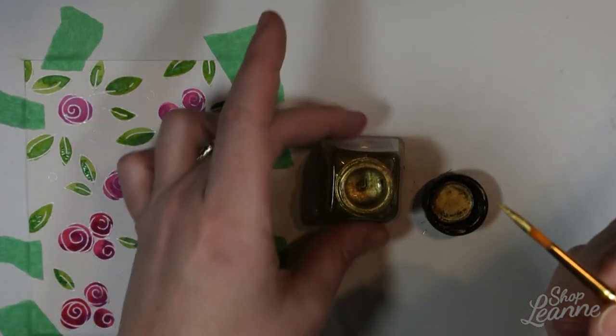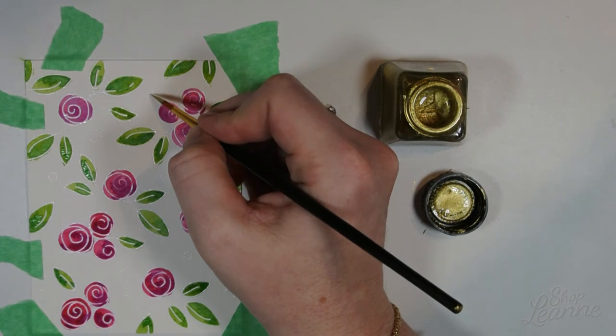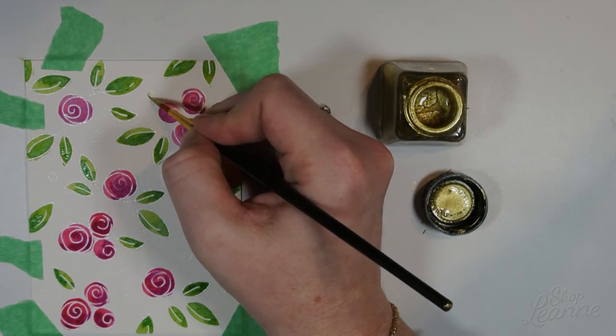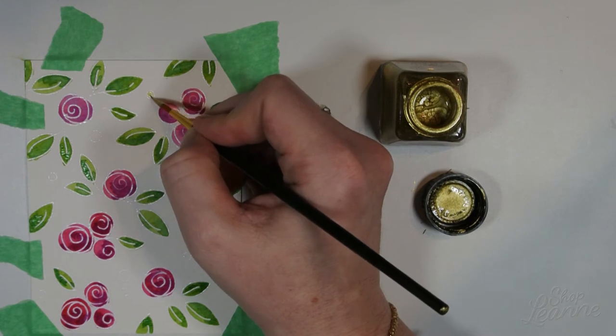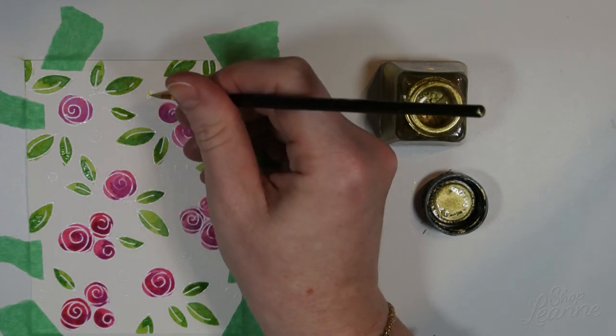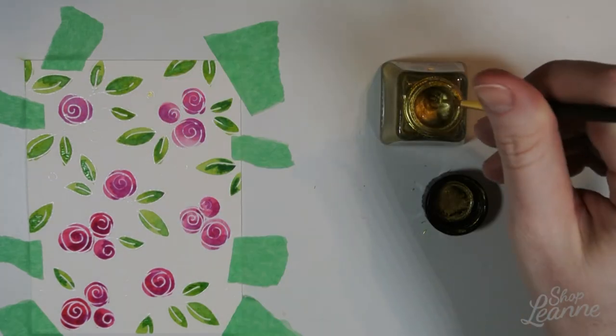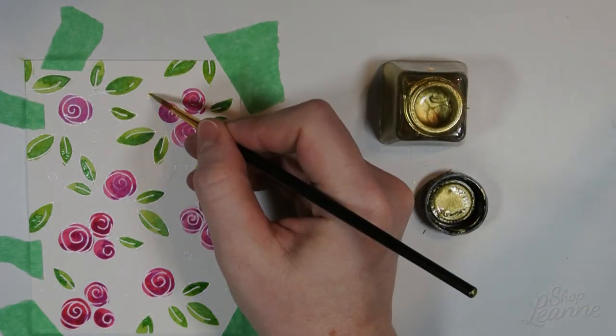So I'm using the Winsor and Newton drawing ink in the color gold. I have a video that I've recently posted, I'll link it as well if you'd like to see a review of this ink. It's really awesome. I've used it a few times now and I really love it. It's so smooth and really bright and glittery.